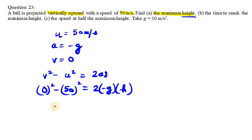So minus 50 square is minus 2500, and from here we bring down minus 2g. We know that g value is 10, so h will be 2500 over 20, which equals 125 meters.